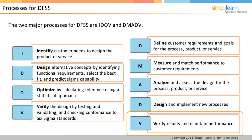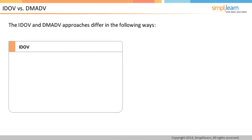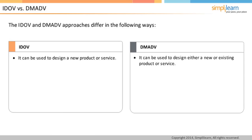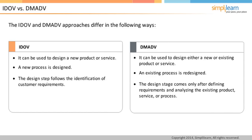The primary difference between IDOV and DMADV is that IDOV is used only to design a new product or service, while DMADV can be used to design either a new or redesign an existing product or service. In IDOV, no analysis or measurement of an existing process is done and the entire development is new, with the design step immediately following identification of customer requirements. In contrast, in DMADV the existing product, service, or process is examined thoroughly before moving to the design phase.